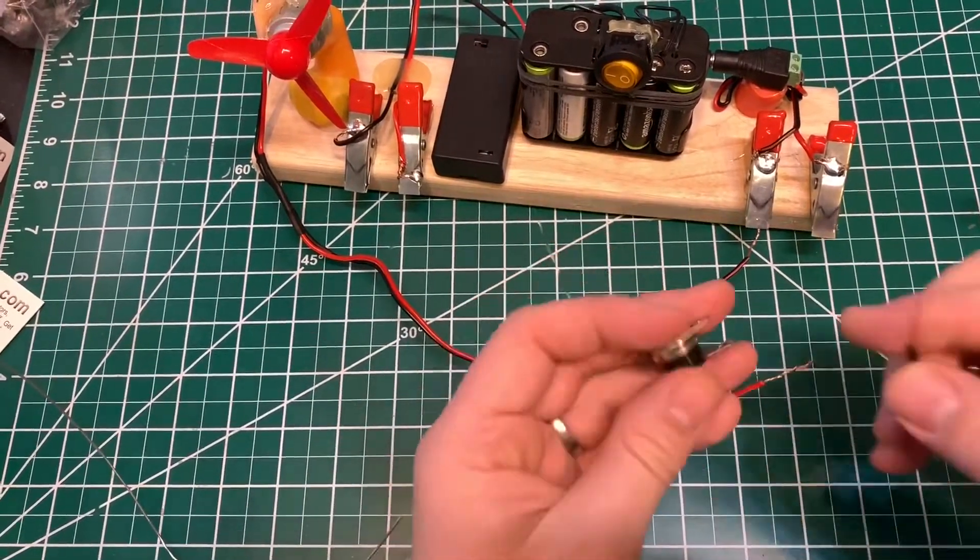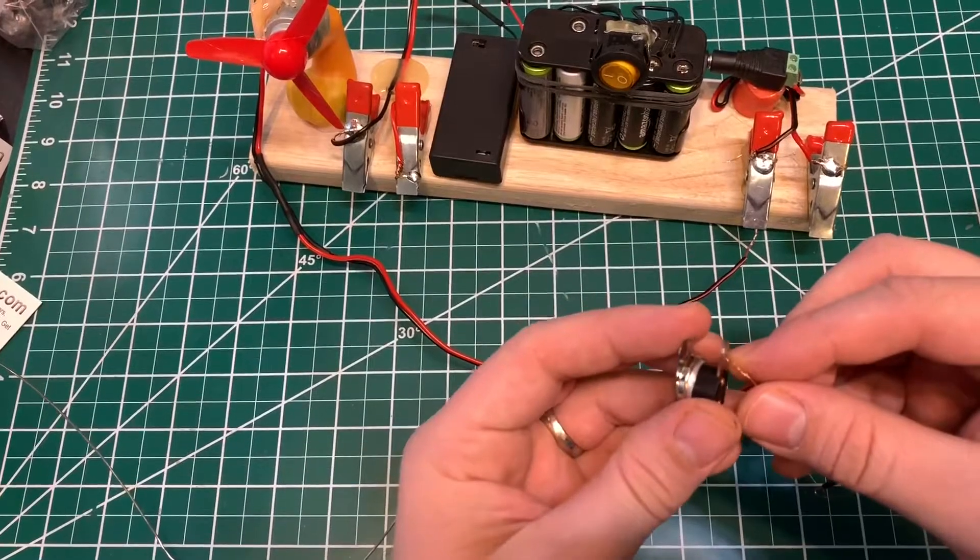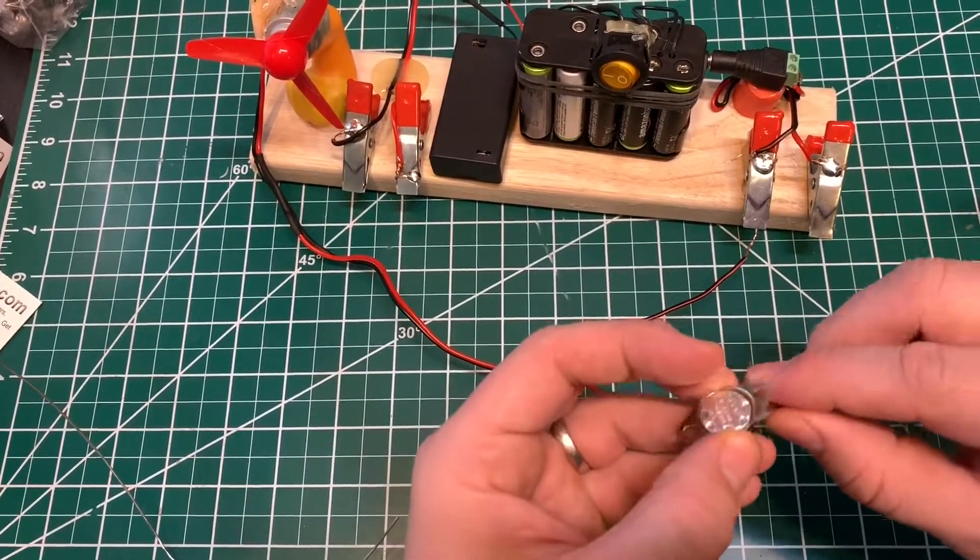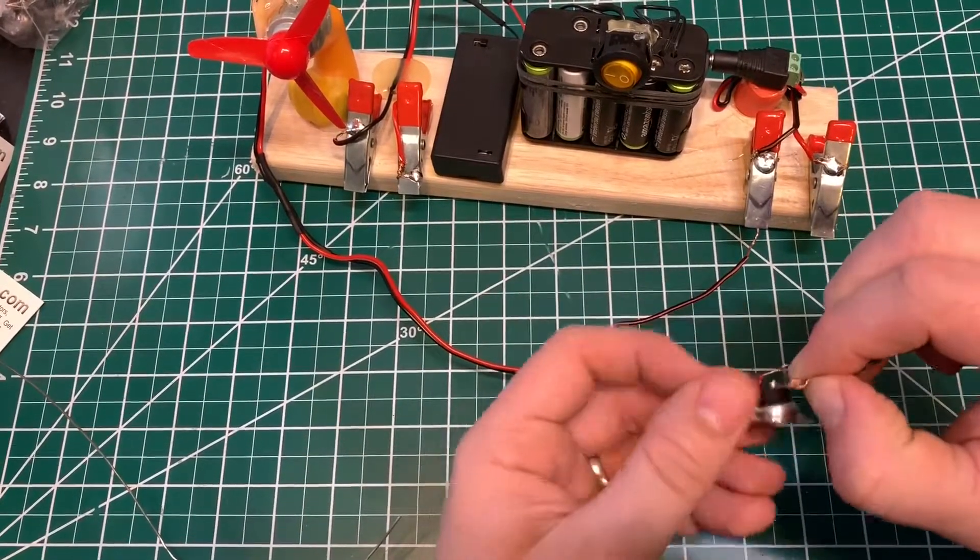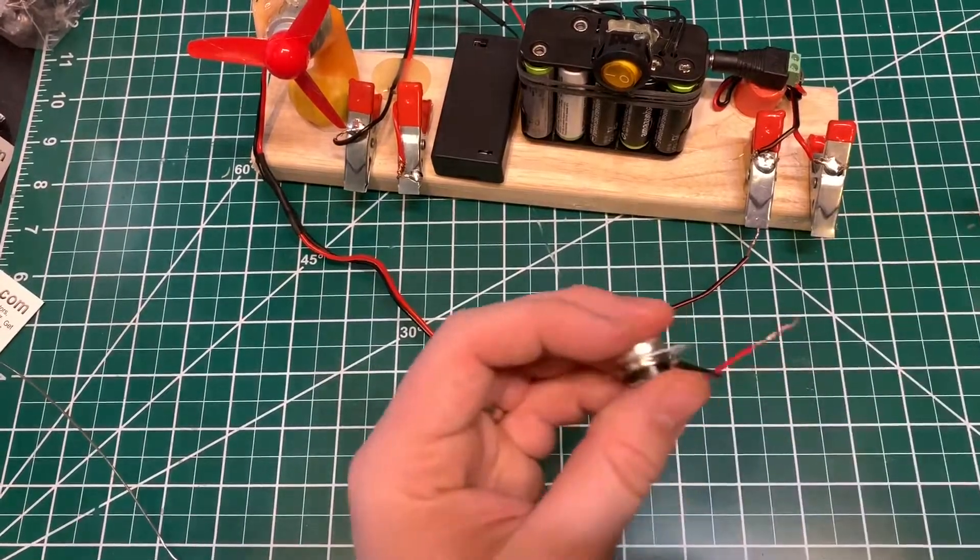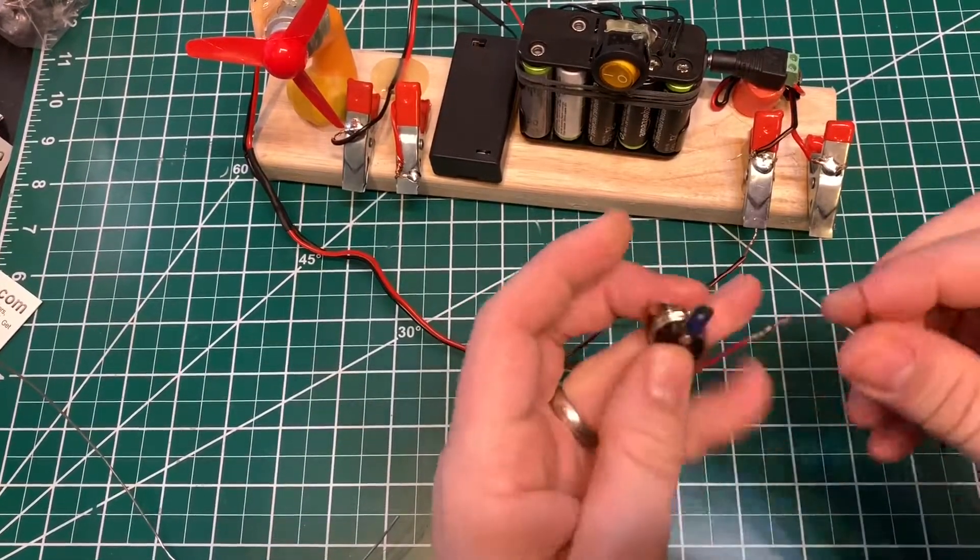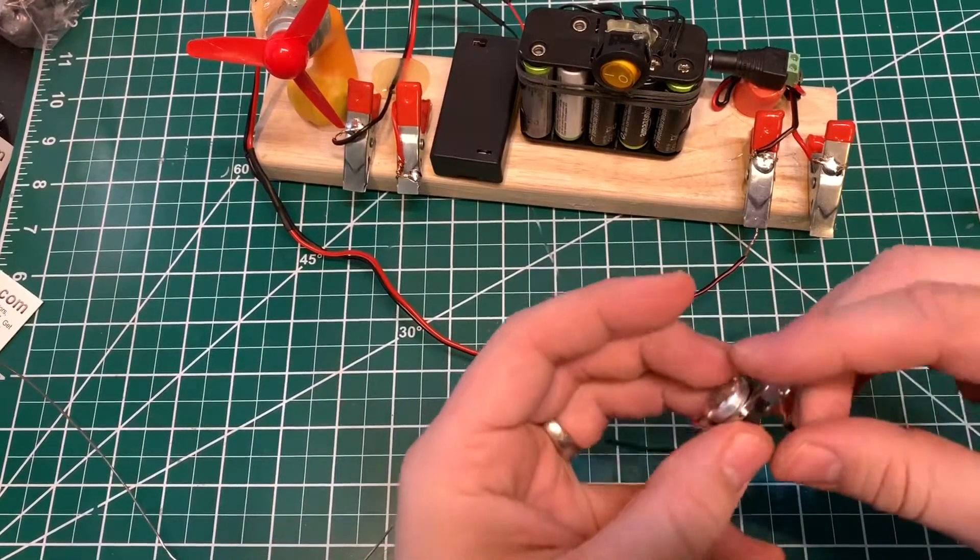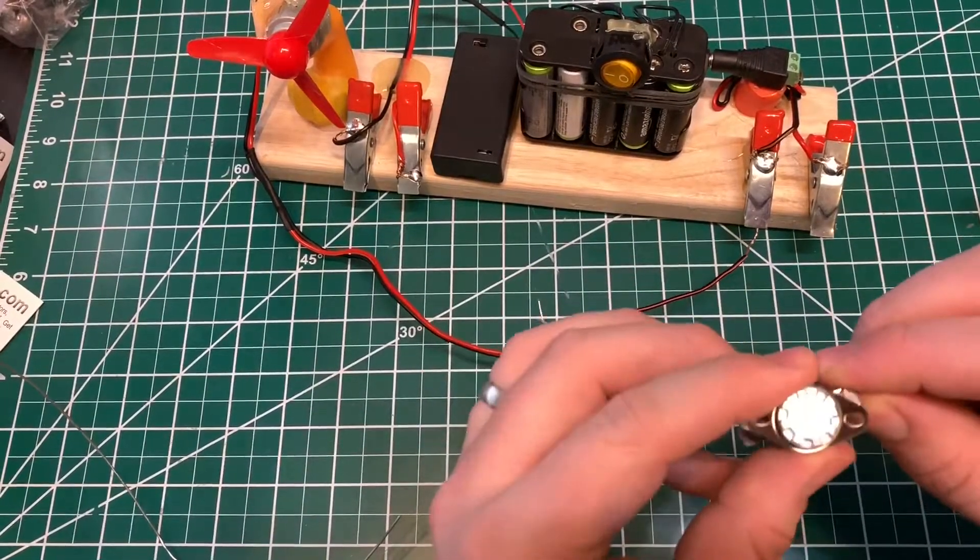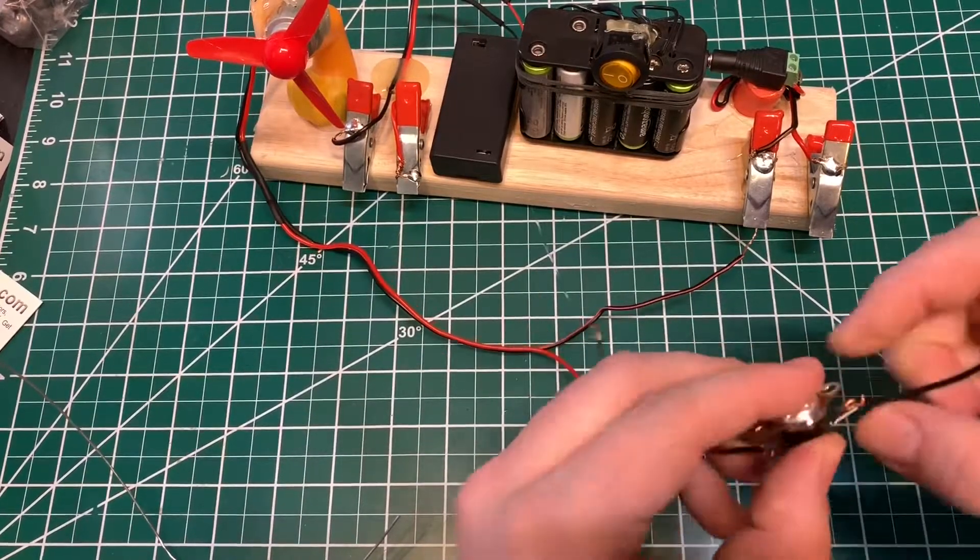So in this video, I'm going to show how this thermostat switch works. It's normally closed, which means the contacts are normally closed and the circuit will be on unless it gets to the rated temperature. And on this one, it's 65 degrees Celsius.